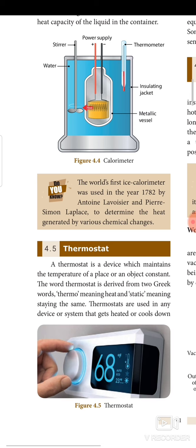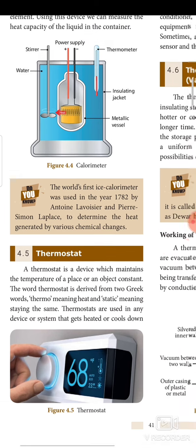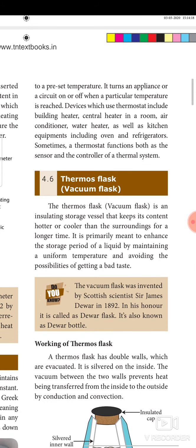Next, let's see the thermostat, which is nowadays very common in cold-region countries. A thermostat is a device which maintains the temperature of a place or an object constant. The word thermostat is derived from two Greek words: 'thermo' means heat and 'static' means staying the same. Thermostats are used in any device or system that heats or cools down to a preset temperature. It turns an appliance or a circuit on or off when a particular temperature is reached. Devices which use a thermostat include building heaters, central heaters, air conditioners, water heaters, as well as kitchen equipment including ovens and refrigerators.